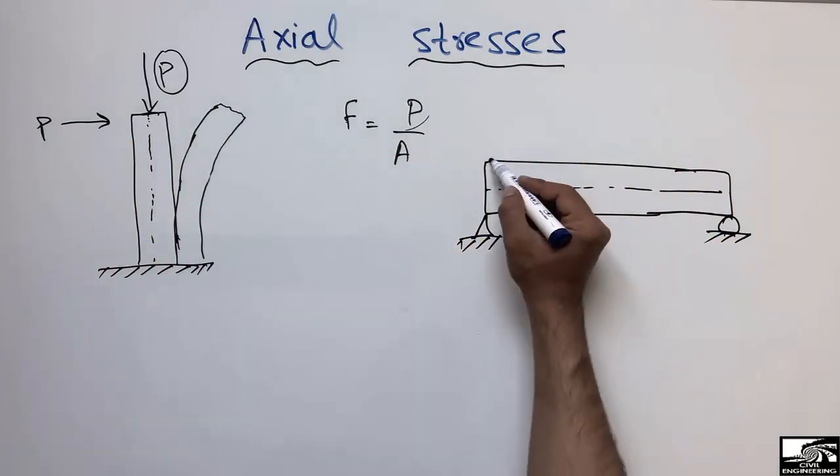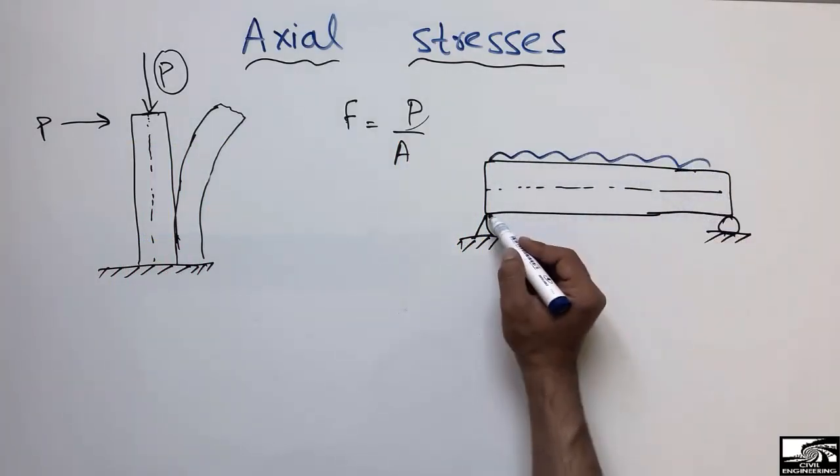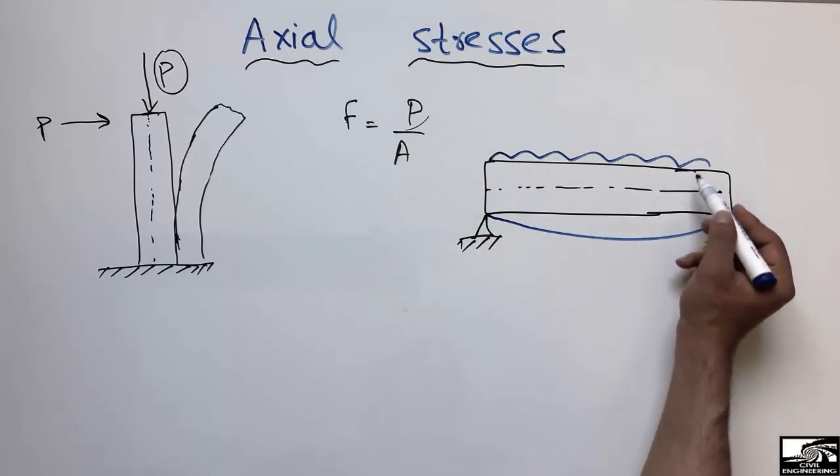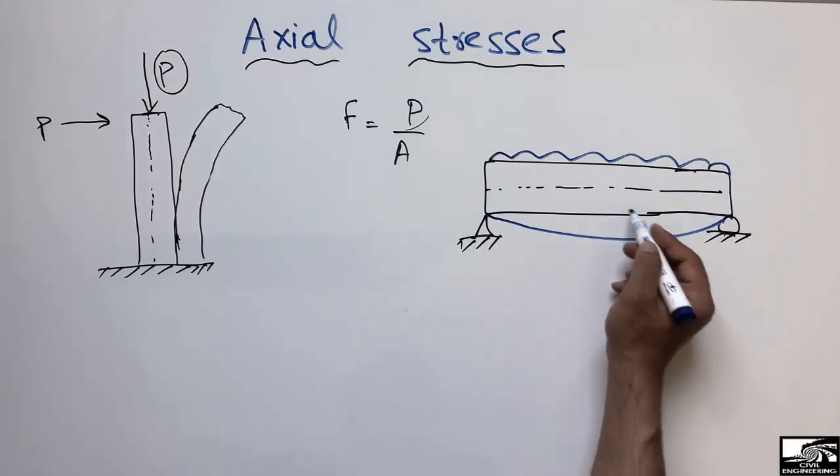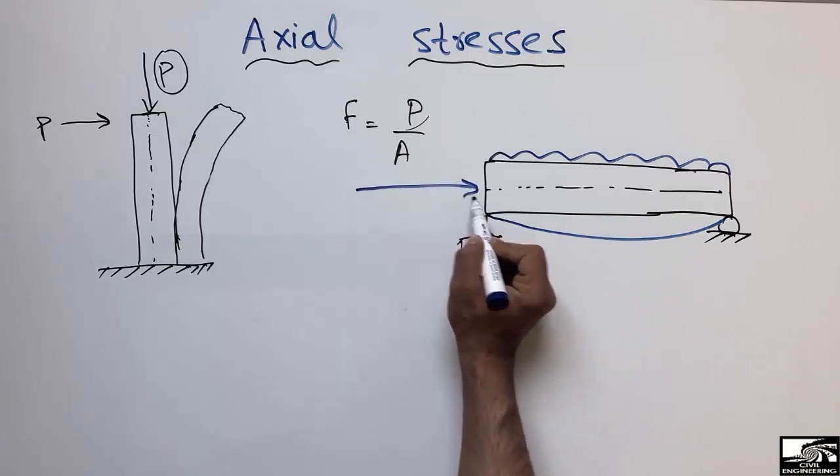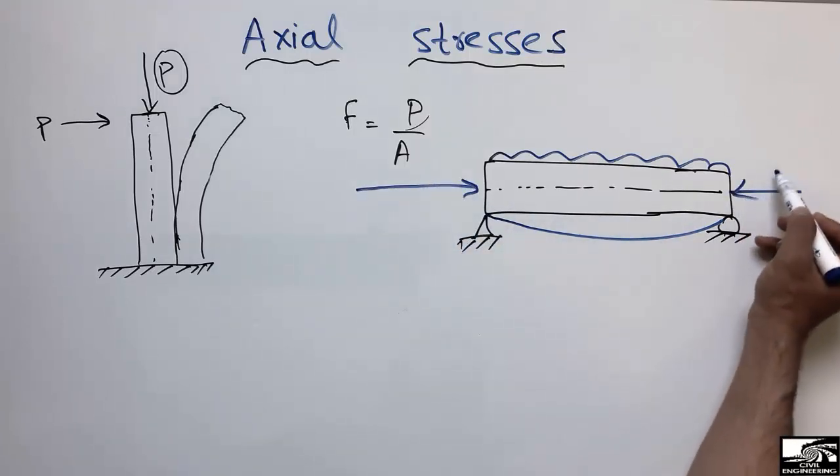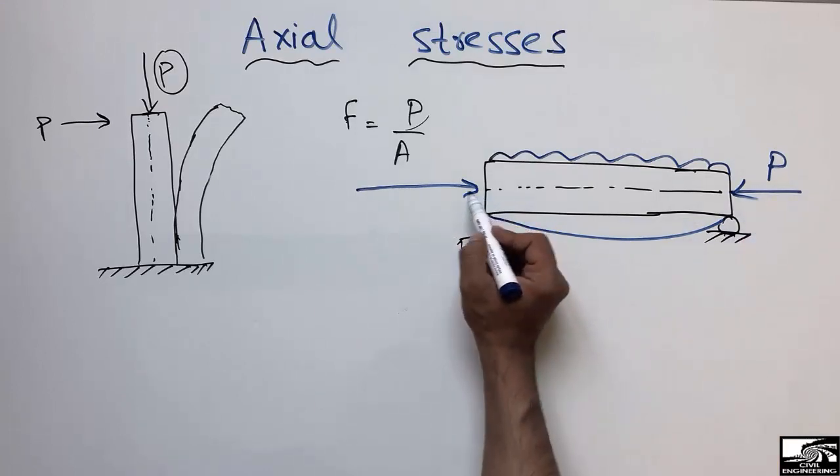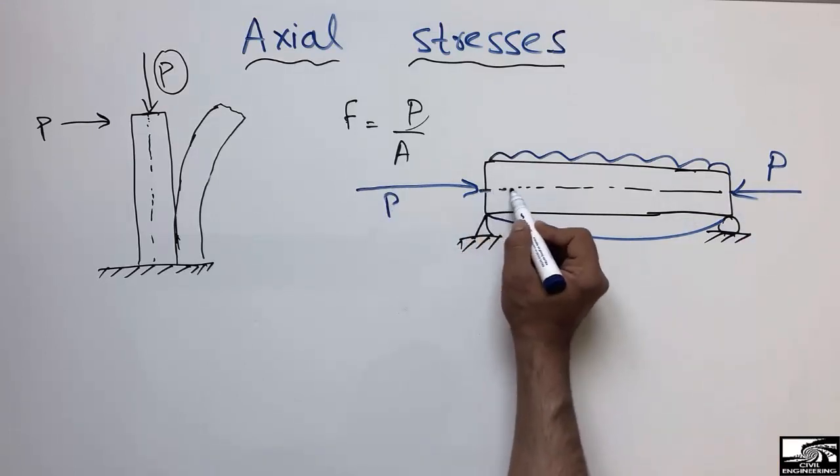Due to the load on this beam, it will deflect in this way and we will have stresses in this section of the beam. But when we have some forces acting on the beam along the axis, we consider it as P. This load is acting along the axis of the beam, you can see here.